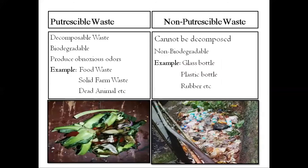Now we'll see what perishable and non-perishable waste are. Perishable waste are those which are decomposable under natural conditions, therefore they are biodegradable in nature. Non-perishable waste, on the other hand, are not decomposable — for example, glass bottles, plastic bottles, and rubber or tires.